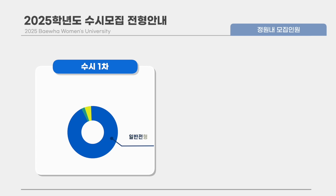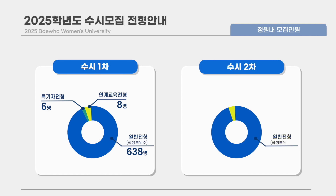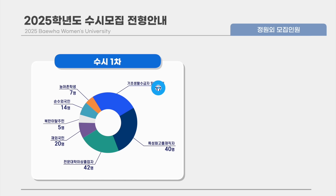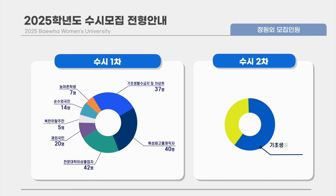수시 1차 정원 내 모집인원은 일반전형 638명, 특기자전형 6명, 연계교육전형 8명을 선발하며, 수시 2차 정원 외 모집은 농어촌학생, 기초생활수급자 및 차상위, 특성화 고졸 재직자, 전문대학 이상 졸업자, 재외국민, 북한이탈주민, 순수 외국인 전형이 있으며, 수시 2차 정원 외 모집은 기초생활수급자 및 차상위, 순수 외국인 전형이 있습니다.